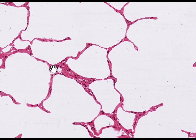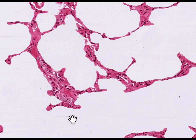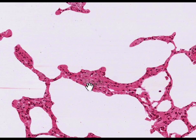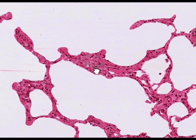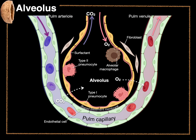It looks like a type 2 pneumocyte because you can see those lamellar bodies — there's a beauty, a type 2 pneumocyte with lamellar bodies inside it. It produces surfactant, which lines the internal surface of that alveolus, reducing surface tension. And look at these dust cells — alveolar macrophages — they look like you just put pepper inside them. And that, my friends, is the alveolus in a nutshell.